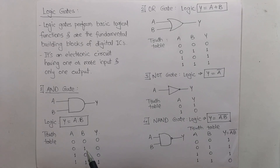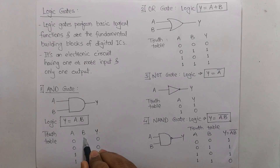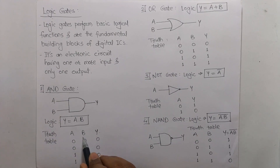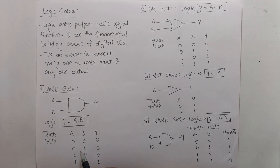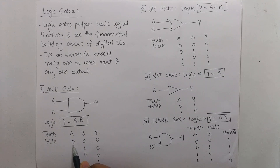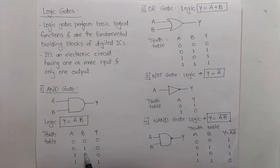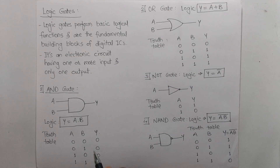This type of table is called a truth table. We list all the combinations of inputs A and B: A=0,B=0; A=0,B=1; A=1,B=0; and A=1,B=1. The output Y equals A times B. So: 0×0=0, 0×1=0, 1×0=0, and 1×1=1. Only when both inputs are 1 will the output be 1.